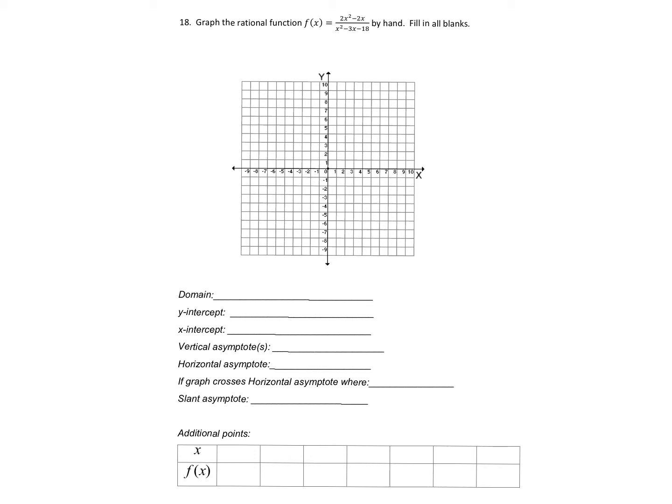Moving on to number 18. We have a rational function and they want us to graph it and fill in all of the blanks. So for rational functions, the first thing I always do is factor the top and the bottom so that we can get a better look at what we're dealing with. So the top I can take out a 2x and I'll have 2x times x minus 1.